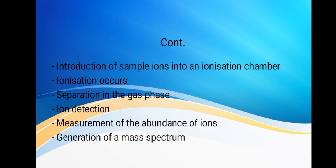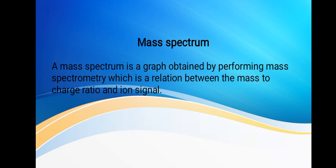There is ion detection followed by the measurement of the abundance of the ions. Then there is the generation of a mass spectrum. A mass spectrum is a graph that is obtained by performing mass spectrometry, which is a relation between the mass-to-charge ratio and ion signal.